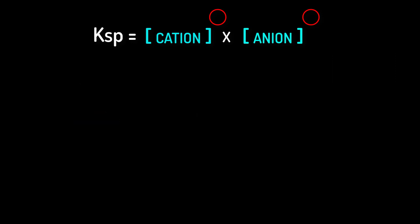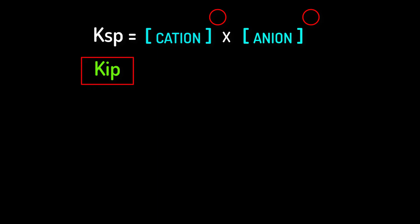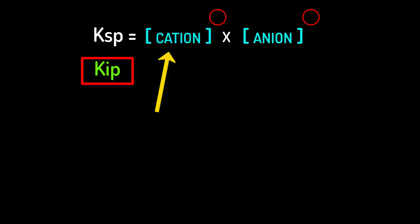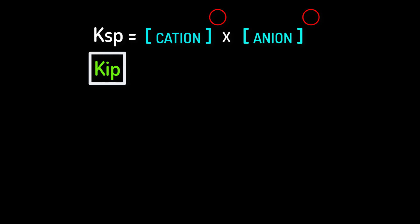In our previous tutorial we learnt about ionic product KIP. Interestingly, the formula of ionic product KIP looks exactly the same as the formula of solubility product KSP — we use the same formula for both. However, the process of determining the value of KIP and KSP is different. For KIP we just need the values of the concentrated cations and anions directly. For KSP we need the solubility values of those ions. Also note that we can determine KIP from either a saturated or unsaturated solution, but to determine KSP a saturated solution is a must. Thanks for watching.